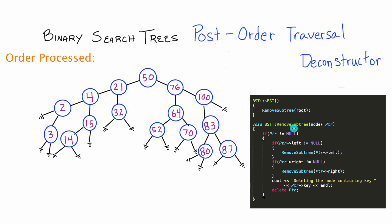If we take a closer look at the remove subtree function we'll see that it's performing recursion. It calls itself passing in the current node's left pointer, and then it calls itself again passing in the current node's right pointer. When it can no longer recursively move left or right, it prints a message saying it's going to delete the current node and then goes ahead and deletes the node it's currently pointing to.